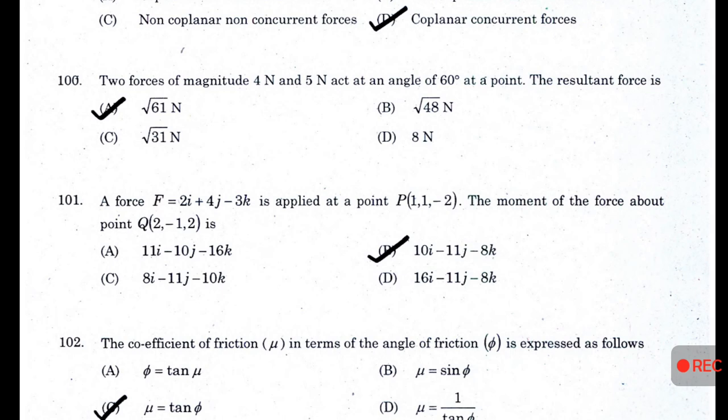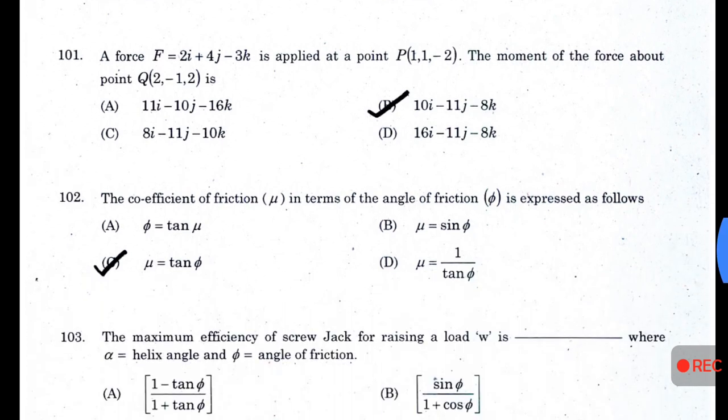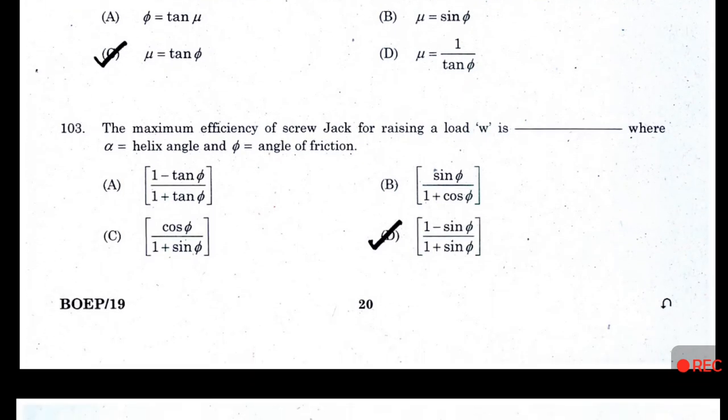A force F = 2i + 4j − 3k is applied at point P(1,1,2). The moment of the force about point Q(2,1,2) is 10i − 11j − 8k. The coefficient of friction μ in terms of the angle of friction φ is expressed as μ = tan(φ). The maximum efficiency of a screw jack for raising a load W is (1 − sin φ)/(1 + sin φ) — answer D.